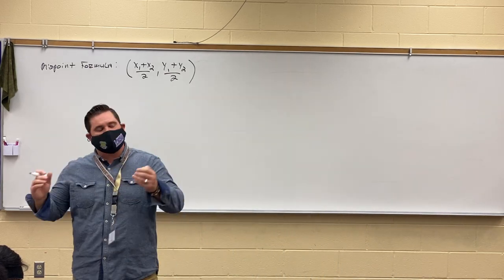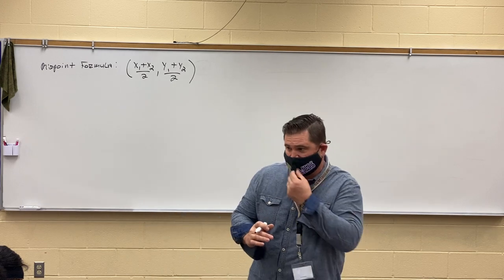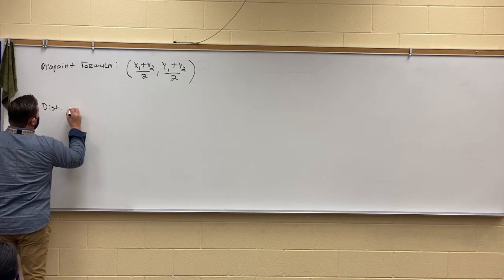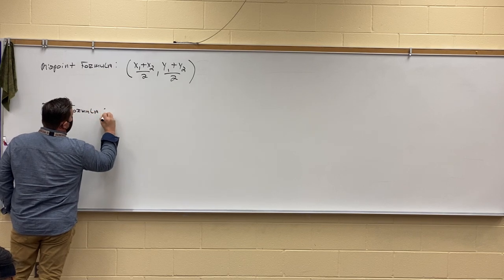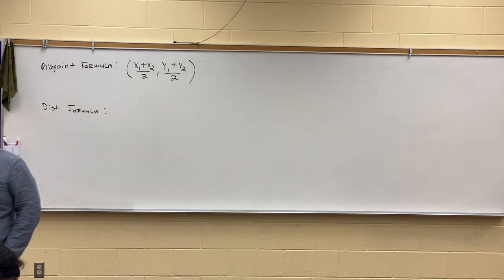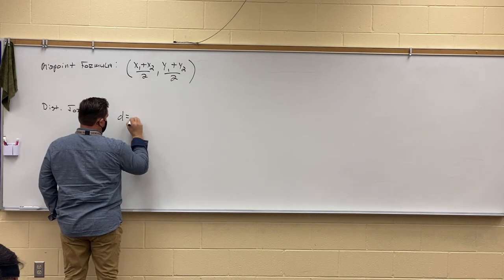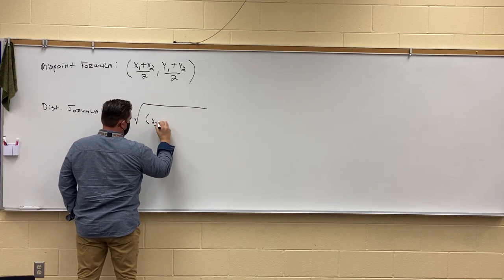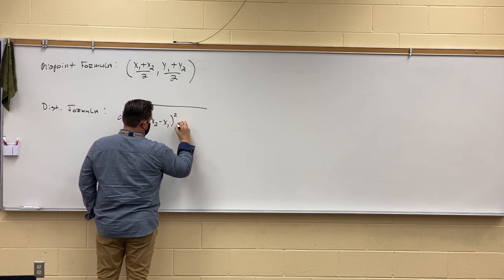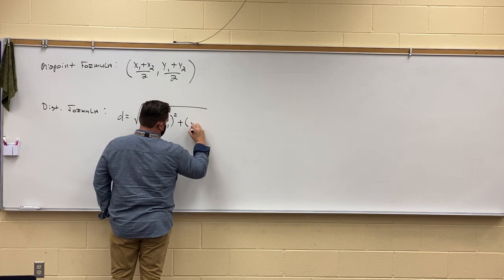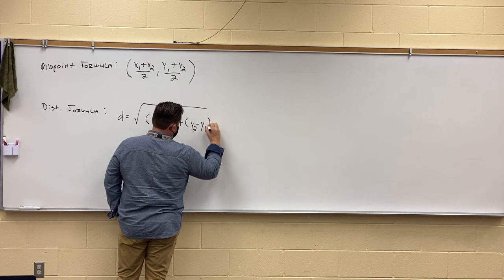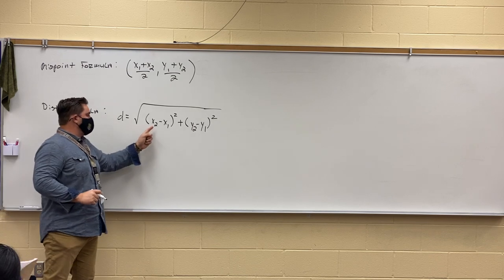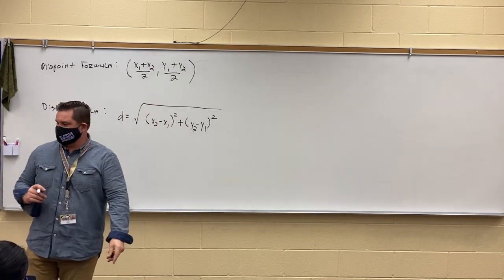Now, also we discussed how we can find distance between two points in a coordinate plane, and to do that we use something called the distance formula. Who can tell me what is the distance formula? Brady Brock: D equals the square root of parentheses X2 minus X1 parentheses squared plus parentheses Y2 minus Y1 parentheses squared. That is correct.